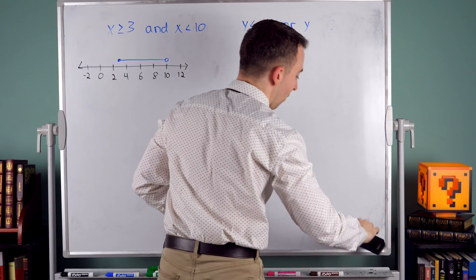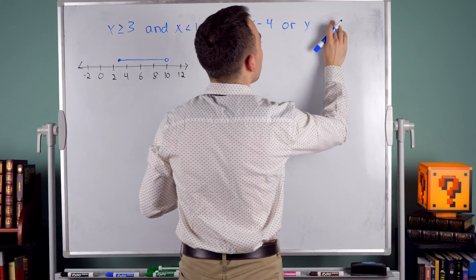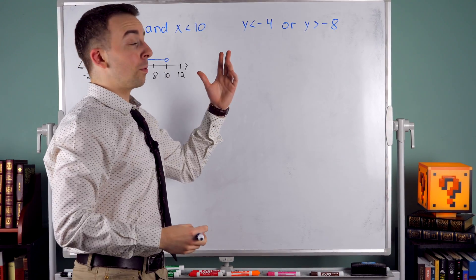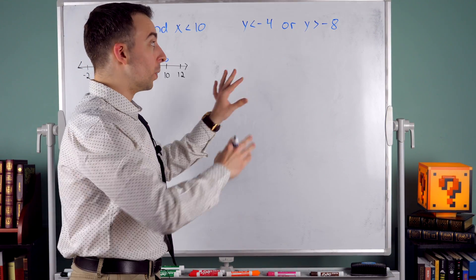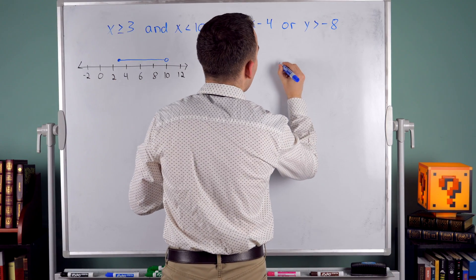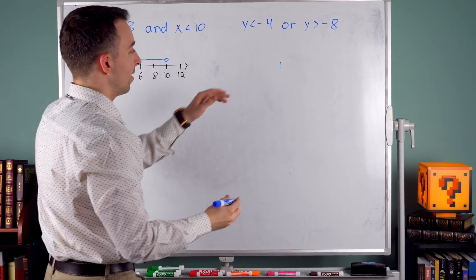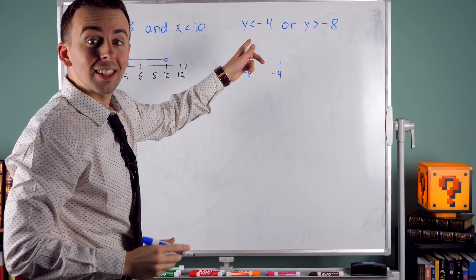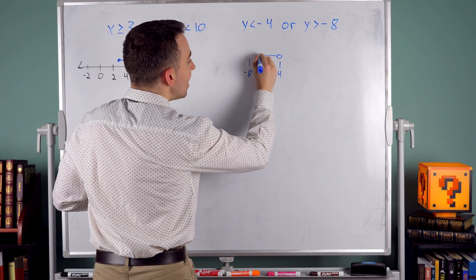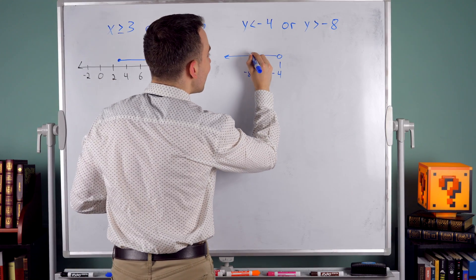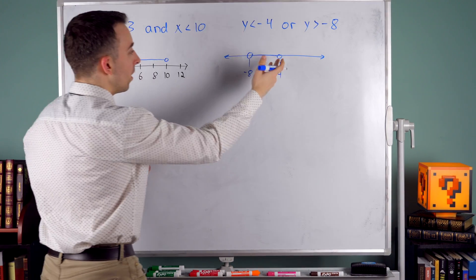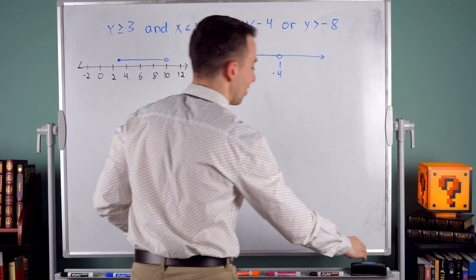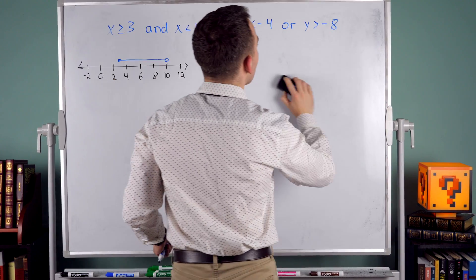Here's another thing: we could say y is less than negative 4 or y is greater than negative 8. Would that make sense? Well, imagine a number line — right here is negative 4, and negative 8 is somewhere further down. The numbers less than negative 4 are all of these numbers, and numbers greater than negative 8 is basically every number. So that means every number satisfies this inequality — which is kind of useless too. So those are some things you can keep your eyes out for.